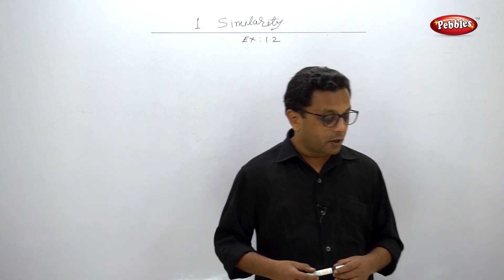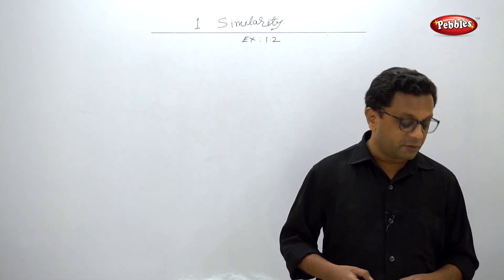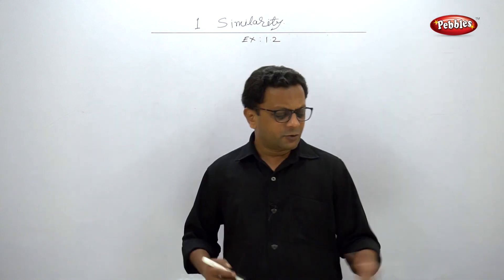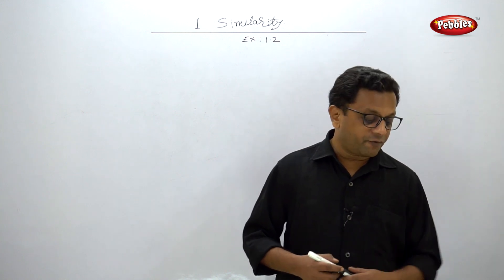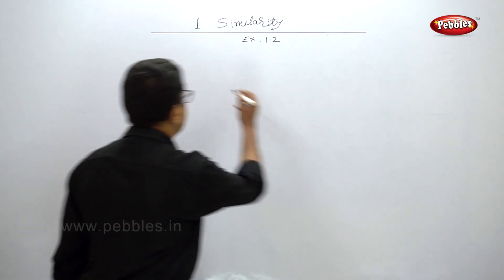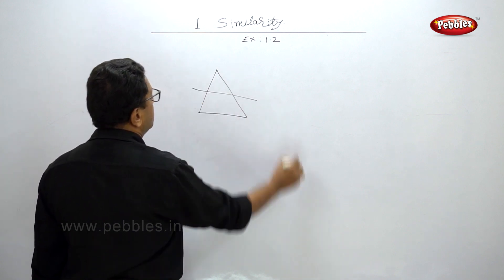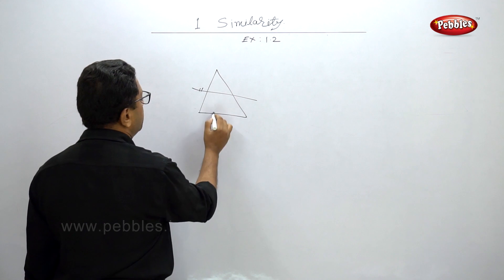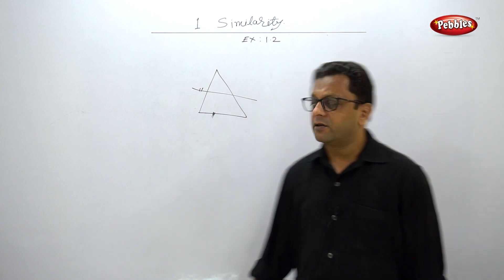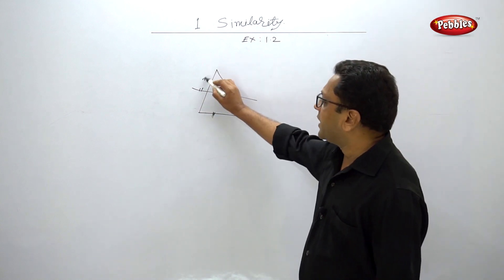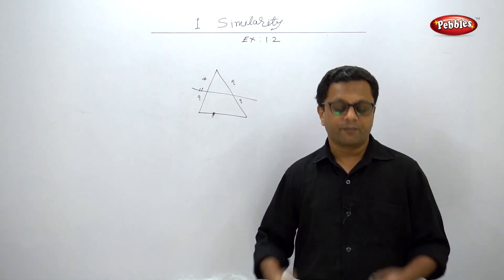This problem comes for two marks in the October 2012 exam and one mark in the March 2013 exam. It is very simple. In all three figures, a triangle is given and one parallel line is given. You have to use the BPT — some values are given and you have to find X.